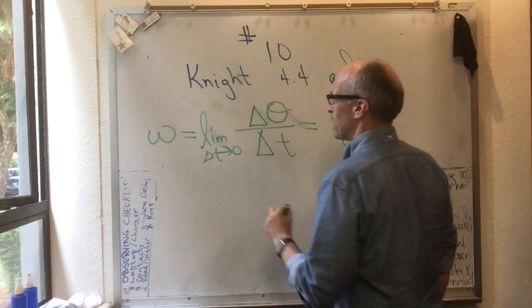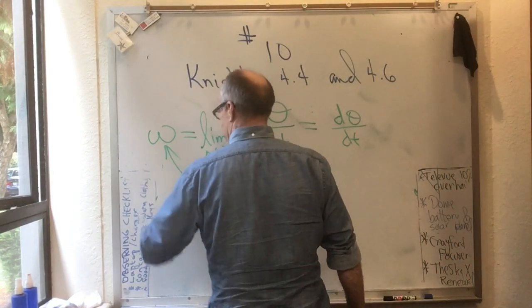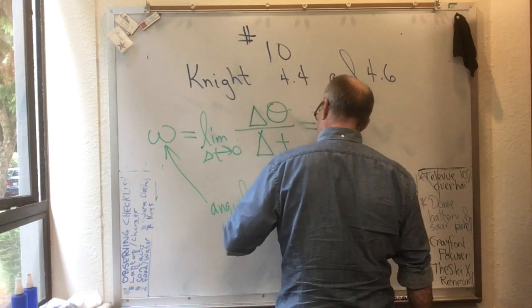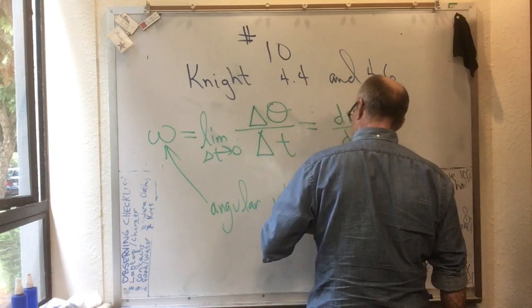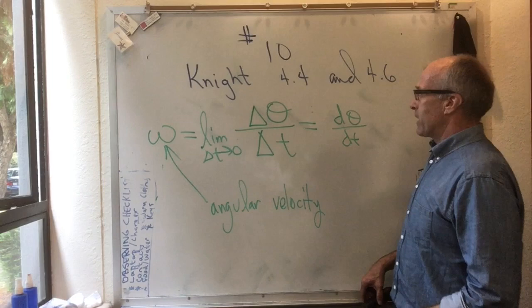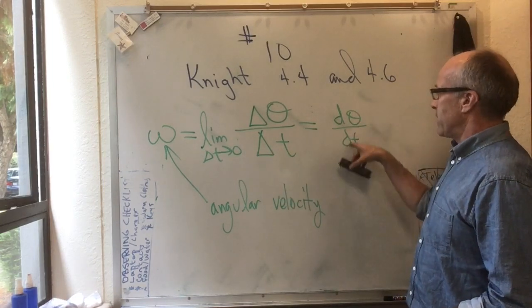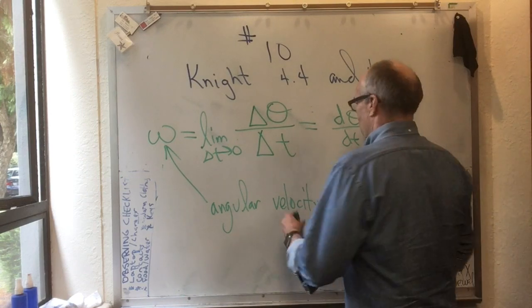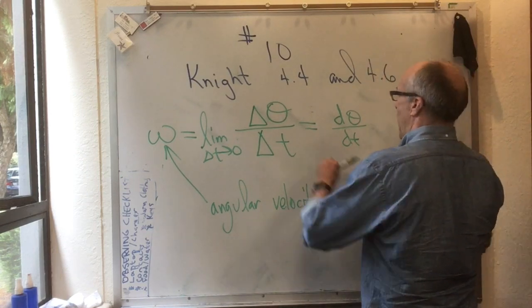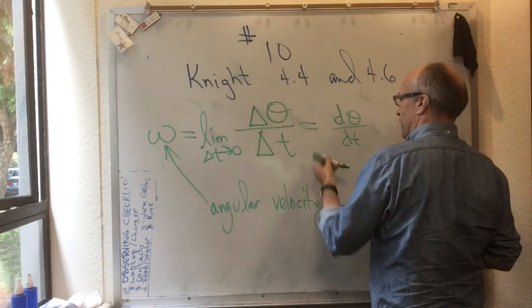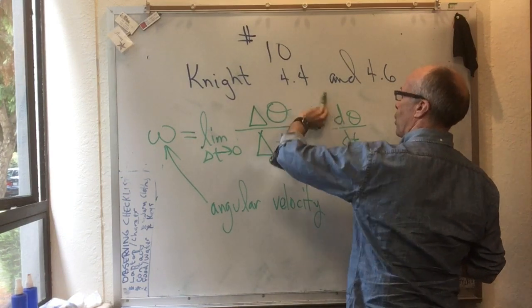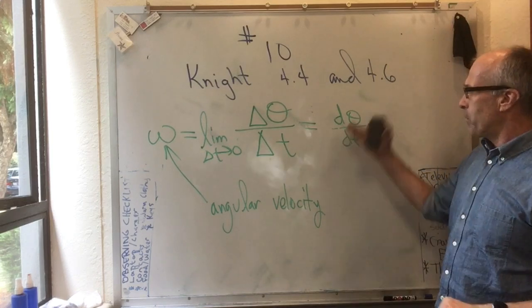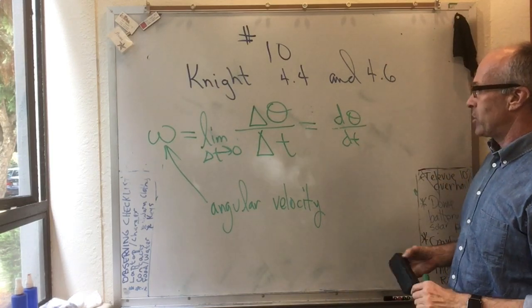So this thing here is known as the angular velocity. Something that has a high angular velocity would be going around very quickly, and something that has a low angular velocity would be going around slowly. It's just a measure of how fast theta is changing.